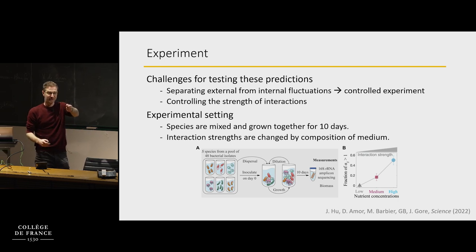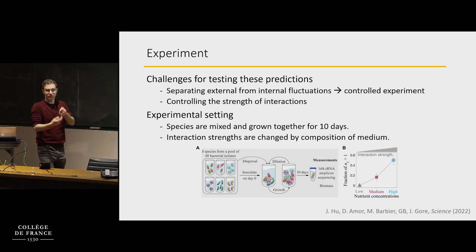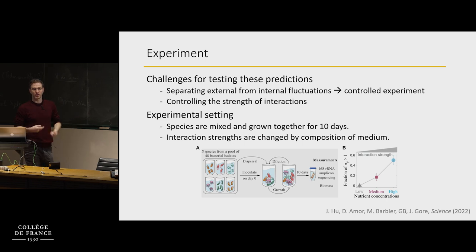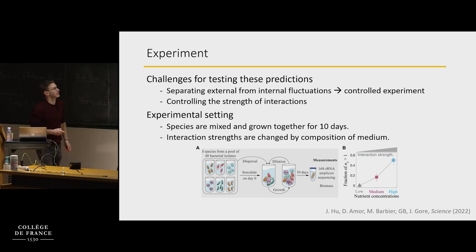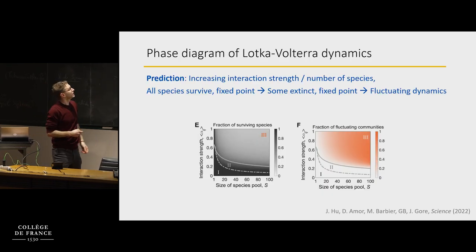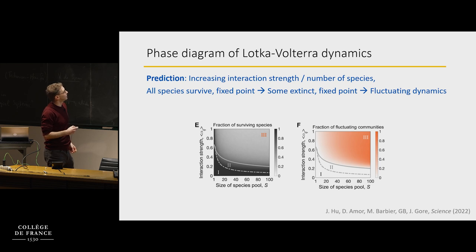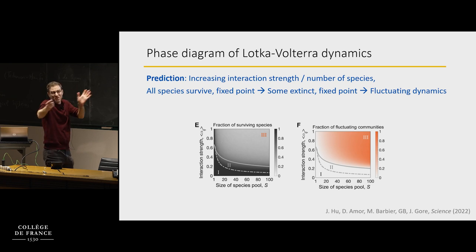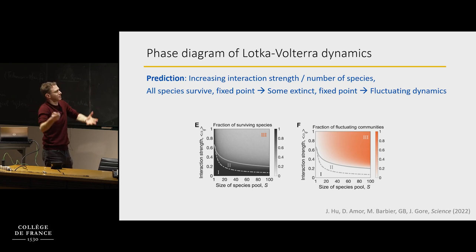Every day you add fresh medium and add a bit of all the species so that you do have migration. The remarkable and special thing they can do is show they can control the interaction strengths — and the way they do that is by changing the properties of the medium. Different compositions of the medium have very significant effects on the interaction strengths.